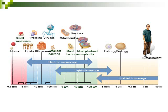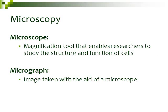Cells were discovered in the 1600s by Robert Hooke and Leeuwenhoek, and those two are also credited with developing some of the earliest primitive microscopes. In order to actually see cells, we have to use different types of microscopes. In microscopy, a microscope is a magnification tool that enables researchers, scientists, and students to look at and study the structure and function of cells.